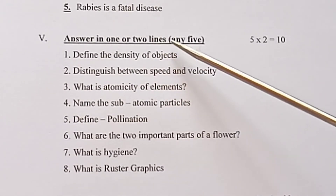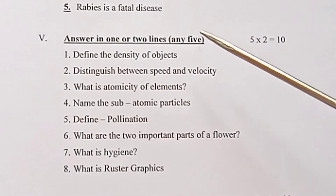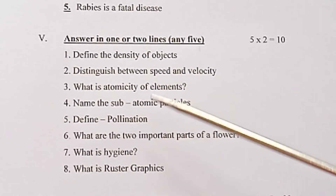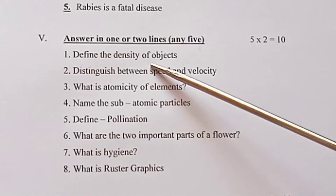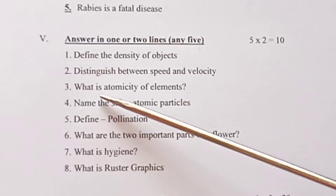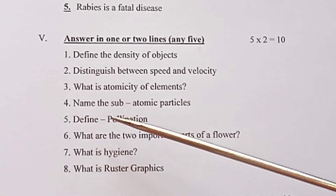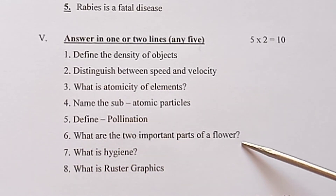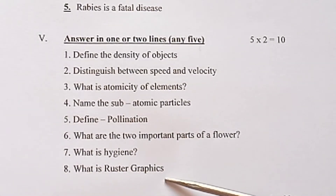Rominator 5: Answer in 1 or 2 lines — any 5, 5 into 2 is equal to 10. Total 8 questions. Questions include: Define the density of objects, distinguish between speed and velocity, what is atomicity of elements, name the subatomic particles, define pollination, what are the two important parts of a flower, what is hygiene, what is vector graphics?